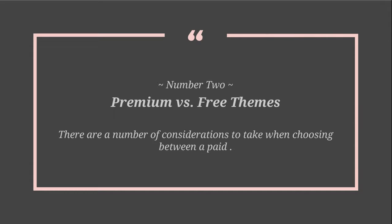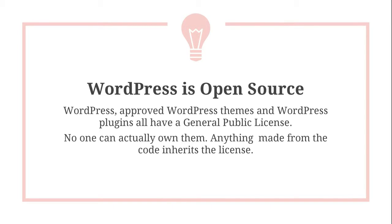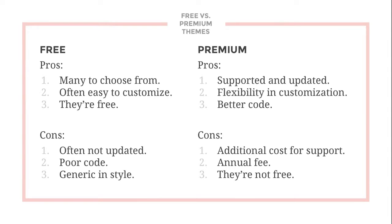When looking for themes, you have options of free themes or premium themes, and there are a lot of things to consider before you choose one. WordPress is open source, which means anybody has access to the code to build upon. Free themes are built on this code, and premium themes are also built on this code but have proprietary styling included — that's what they charge for.